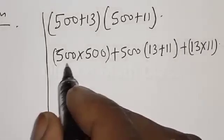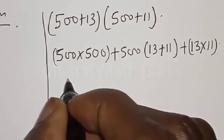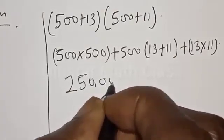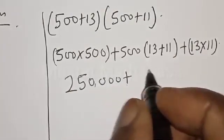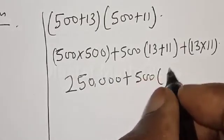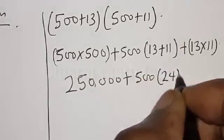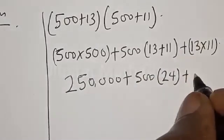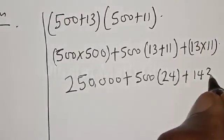Now from here, 500 multiplied by 500, that is 250,000, plus 500 into (13 plus 11), that is 24, plus 13 times 11, that is 143.